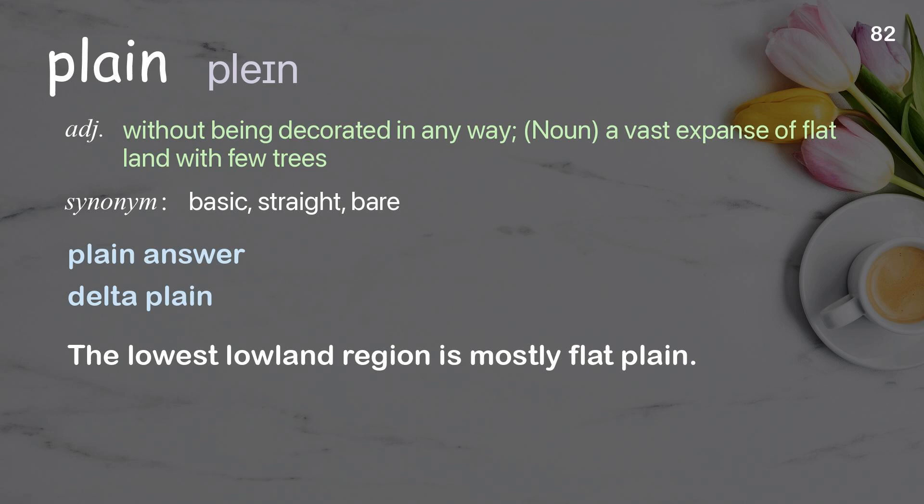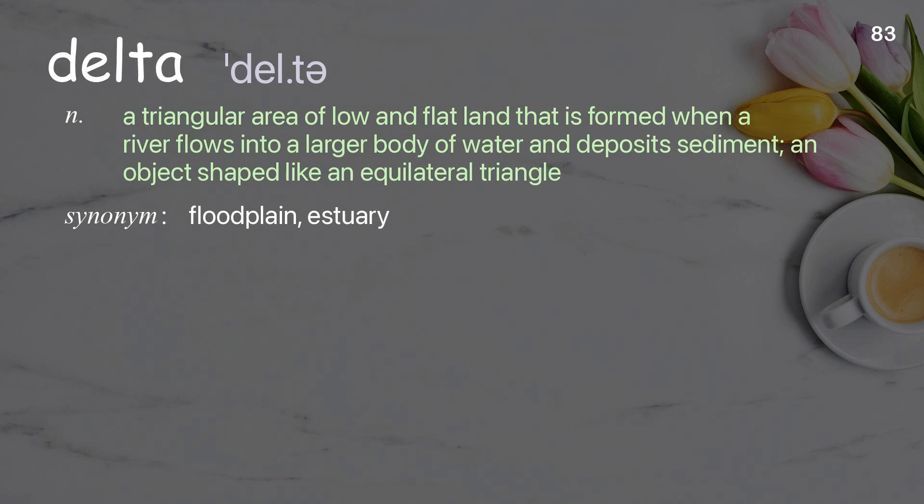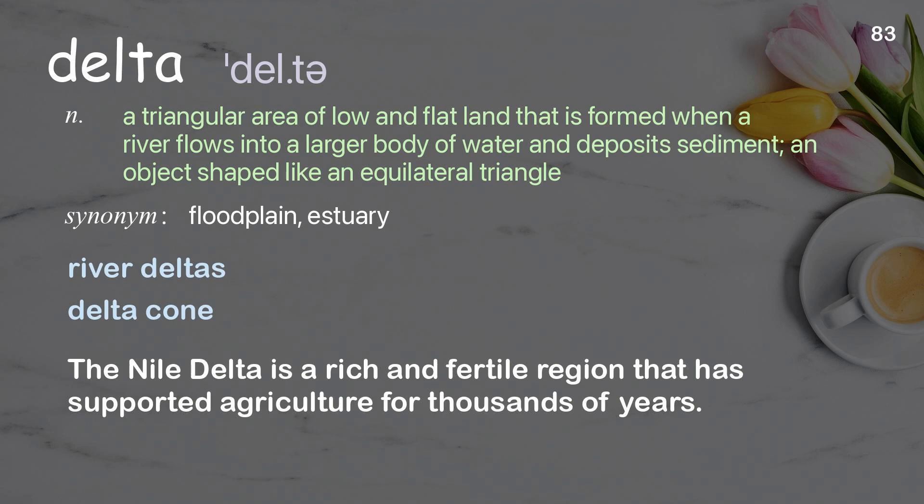Delta: a triangular area of low and flat land that is formed when a river flows into a larger body of water and deposits sediment; also an object shaped like an equilateral triangle. Examples: river deltas, delta cone. The Nile Delta is a rich and fertile region that has supported agriculture for thousands of years.